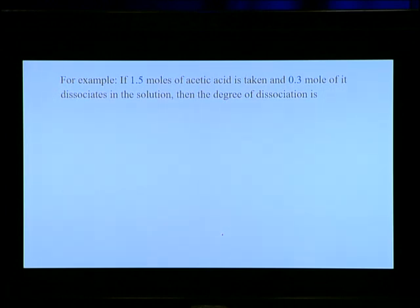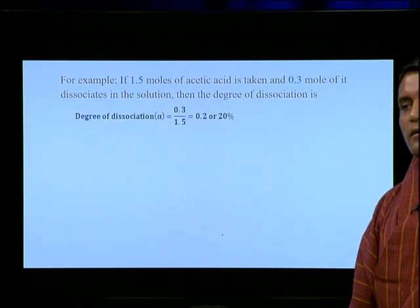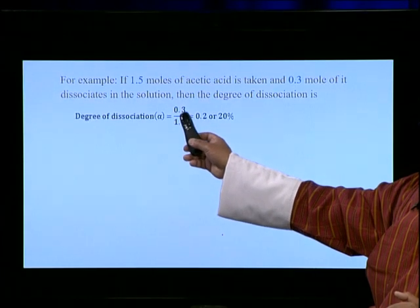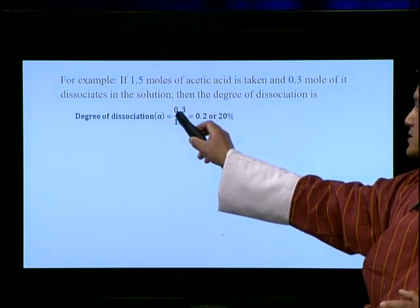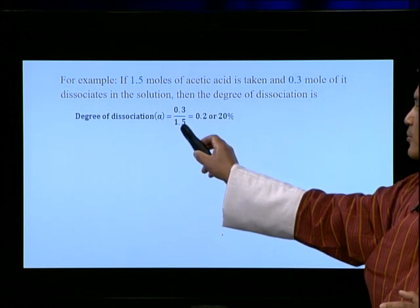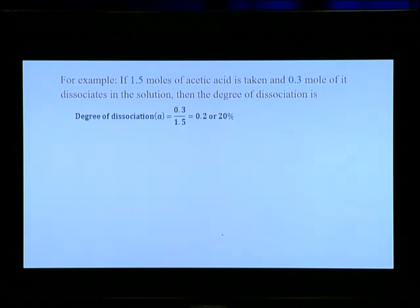This is the mathematical formula to calculate degree of dissociation. For example, if we take 1.5 moles of acetic acid and out of which 0.3 moles undergoes dissociation in solution, then degree of dissociation = 0.3 ÷ 1.5 = 0.2. So degree of dissociation becomes 0.2, or 20% in percentage, meaning out of 100 molecules, only 20% of this particular electrolyte has undergone dissociation.